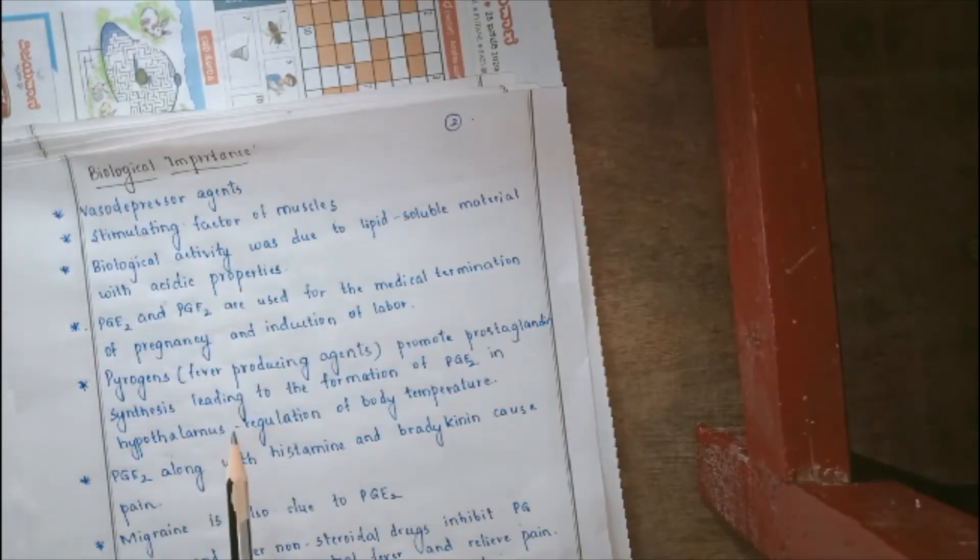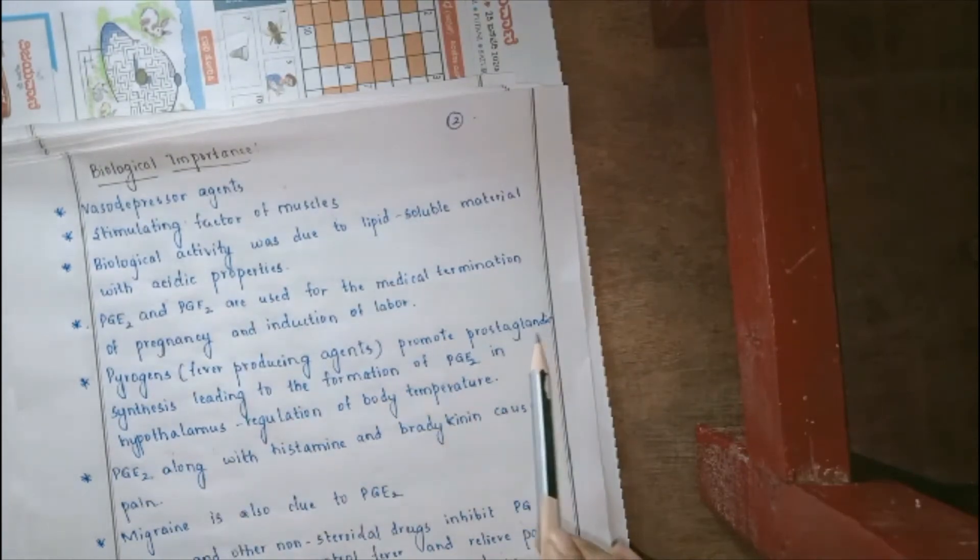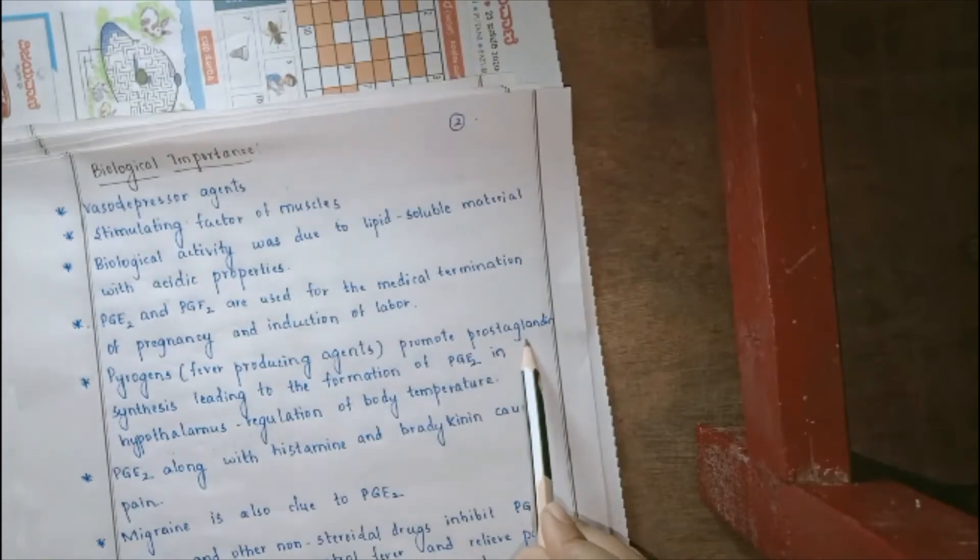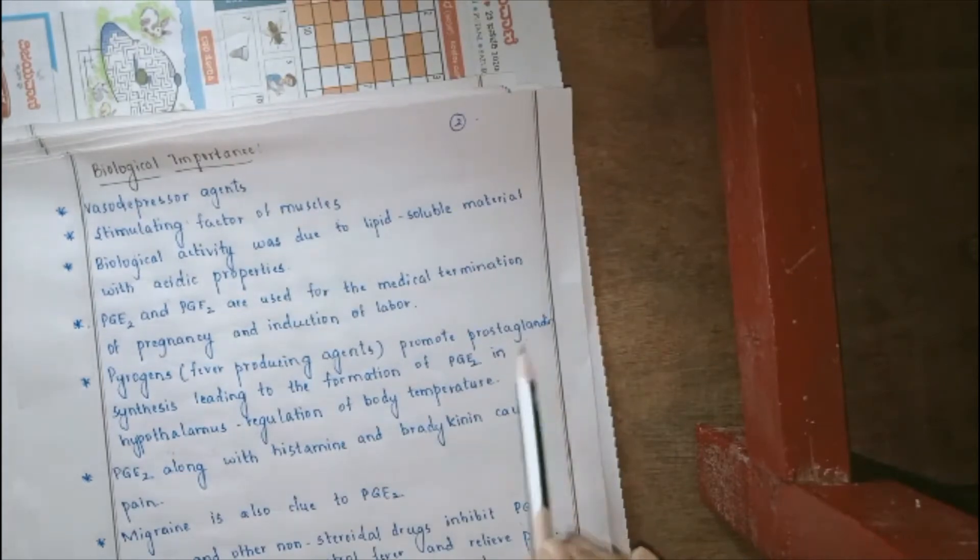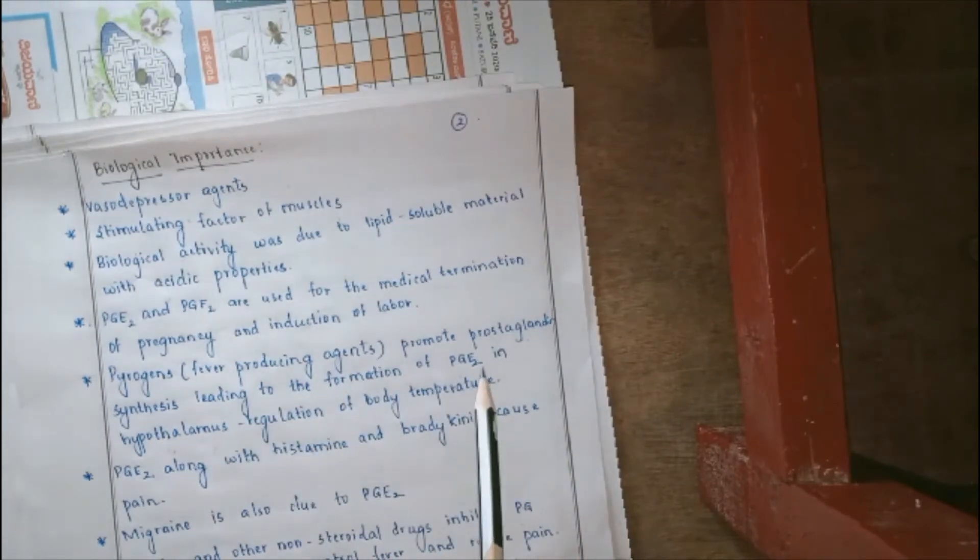Generally, when pyrogens, that means, fever-producing agents, they help in promoting the synthesis of prostaglandins. This would actually be synthesized in the hypothalamus of the brain, that means, the hind brain. When the prostaglandins gets synthesized in the hind brain, that is, particularly PGE2, there is a regulation of the body temperature. So, prostaglandins are also utilized for the regulation of the body temperature.